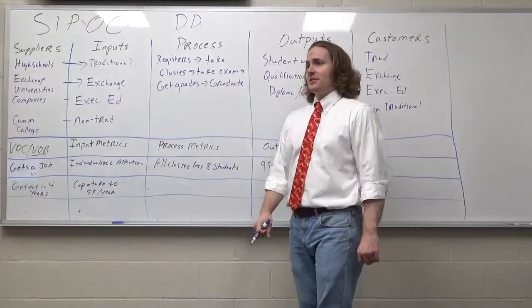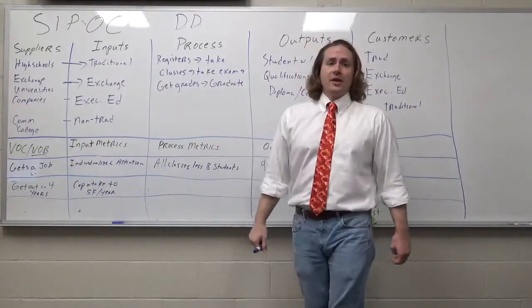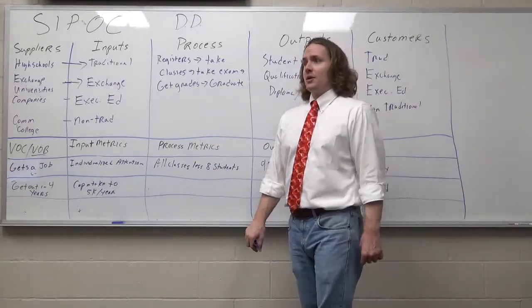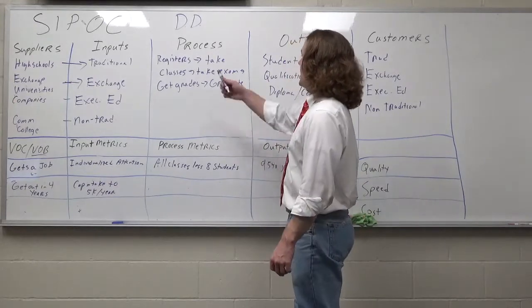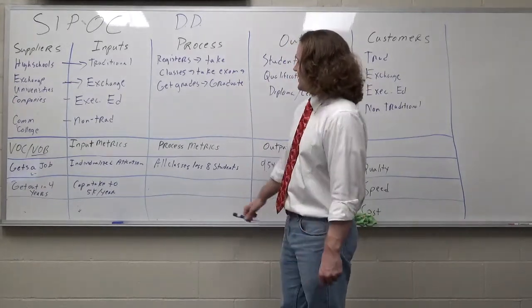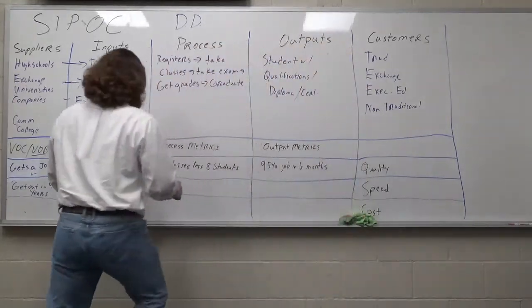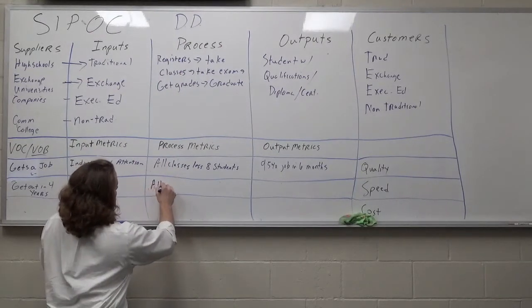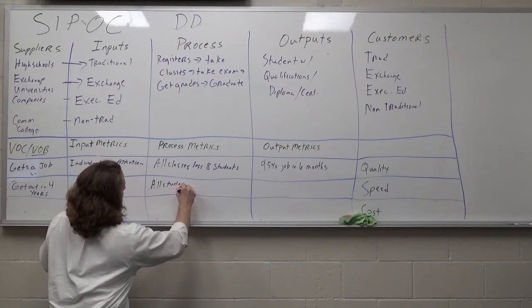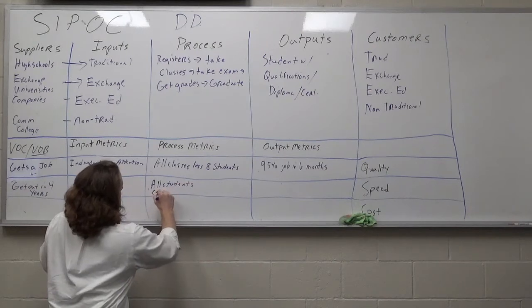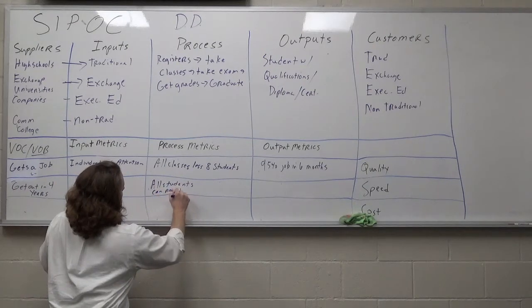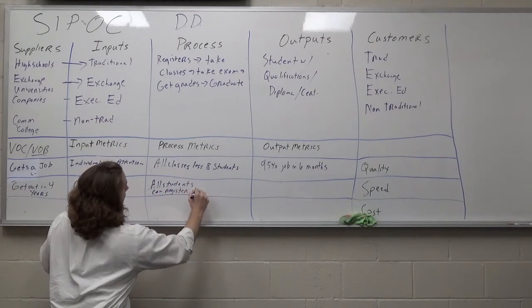And that might be something for traditional students to consider. Let's say you're a big university. Each class has about 5,000 students per class. You need to make sure you don't let in more than 5,000 students per year. How does the process work for that? We want to make sure that all students can register for the classes they need.